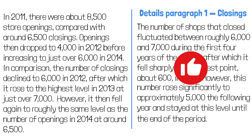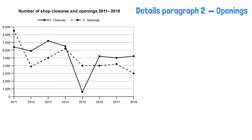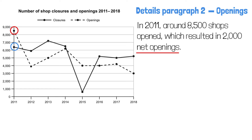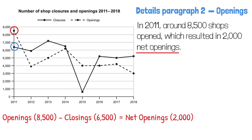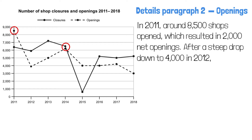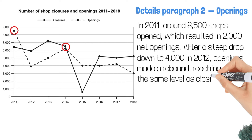Now let's move on to details paragraph 2 — openings. I know you want to make comparisons like 'there were more openings than closings in 2011.' Here's an advanced way to do it: 'In 2011, around 8,500 shops opened, which resulted in 2,000 net openings.' To get net openings, of course, you need to compare openings with closings. So this clause compares openings with closings without explicitly mentioning closings — how clever is that? I will make another comparison: 'After it dropped to 4,000 in 2012, openings made a rebound, reaching nearly the same level as closings in 2014 at just over 6,000.'